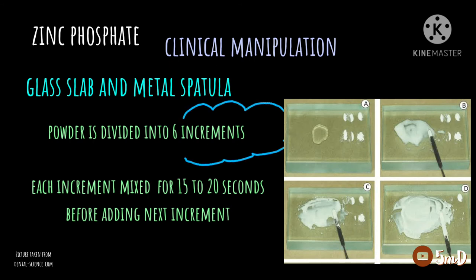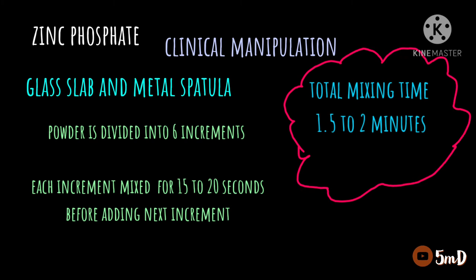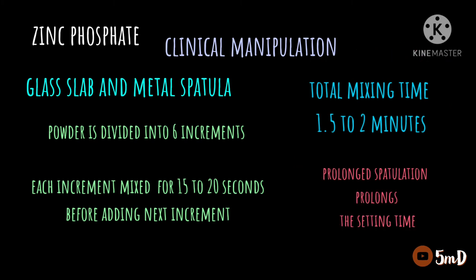The powder-to-liquid ratio depends on the manufacturer's recommendation. After incrementally adding the powder segments to the liquid and mixing for about 15 to 20 seconds before adding the next increment, a total mixing time of 1.5 to 2 minutes is used. Prolongation of the mixing time also increases the setting time.